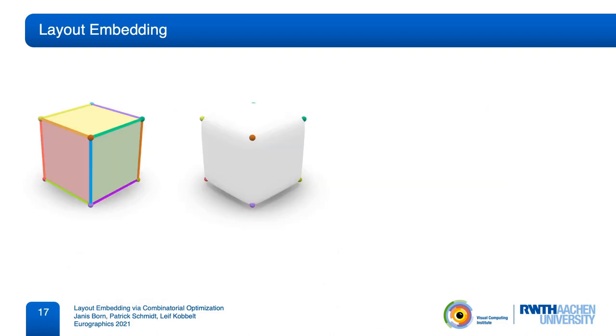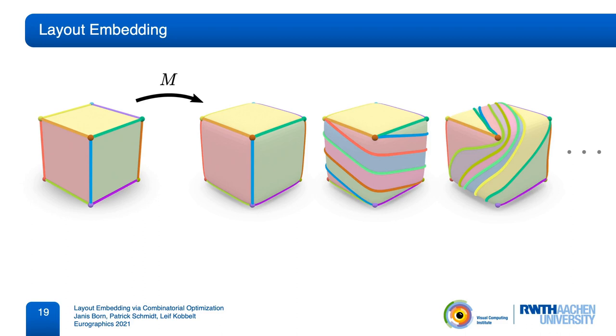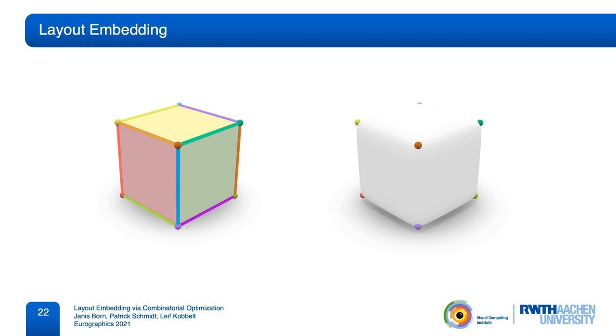Consider this simple example of a cube layout and target surface. Besides the obvious embedding, there is an infinite amount of other options that twist the embedded edges around in different ways. However, we consider this embedding the most natural, because the paths are short and avoid unnecessary detours. Of all embeddings, it has the shortest total length of all embedded edges. This preference for shortest embeddings can be found in many previous works and is the motivation for a simple incremental algorithm.